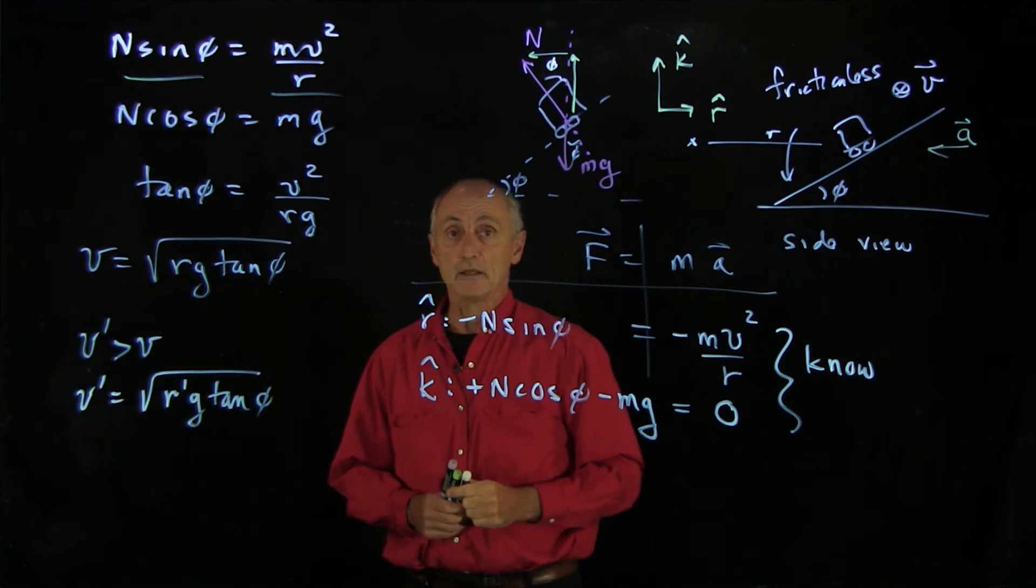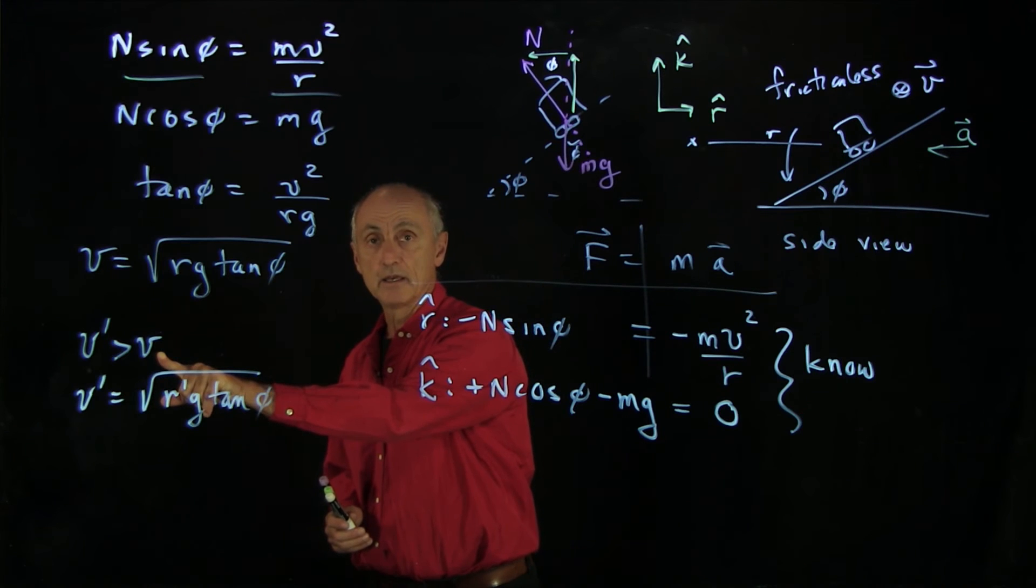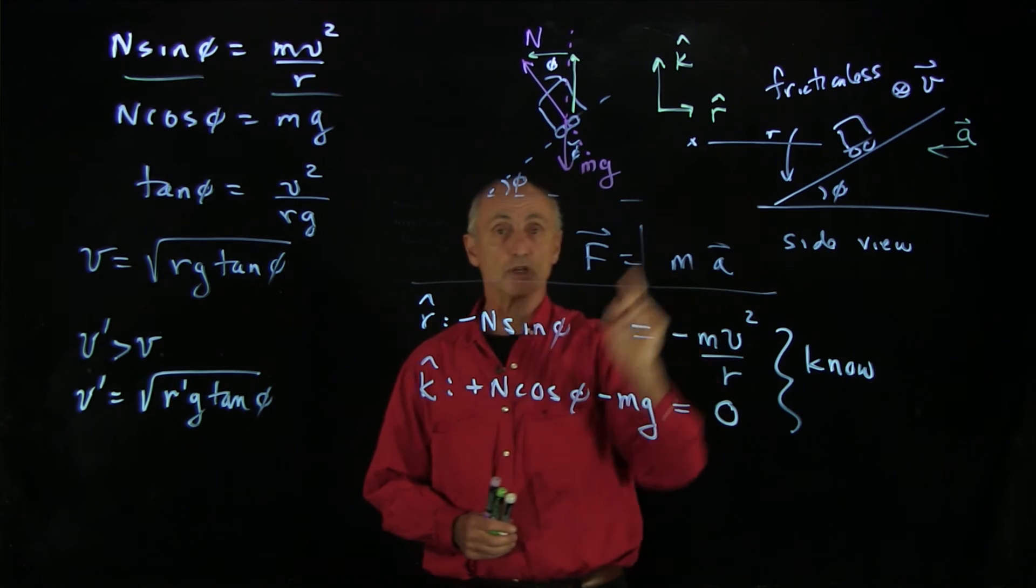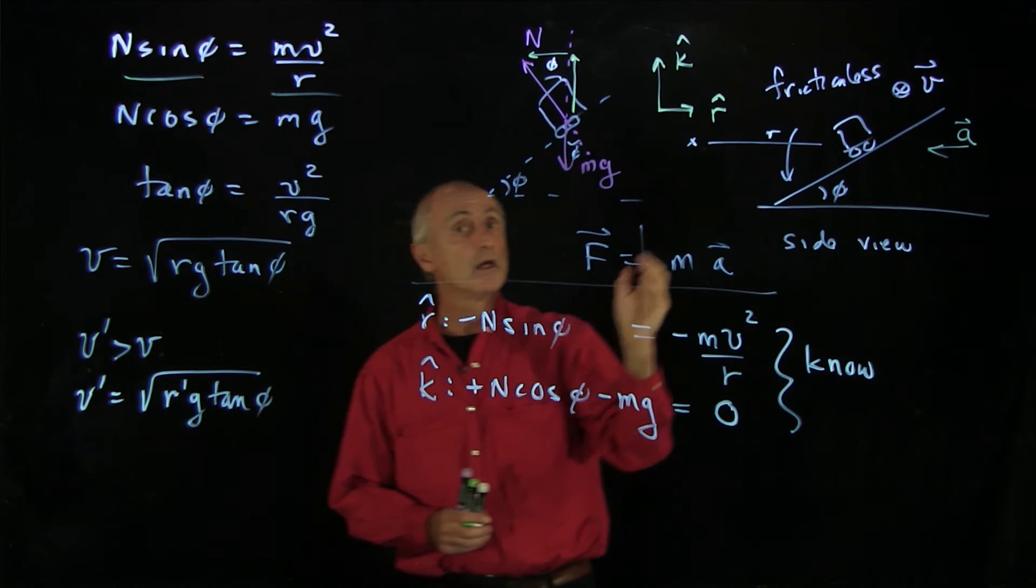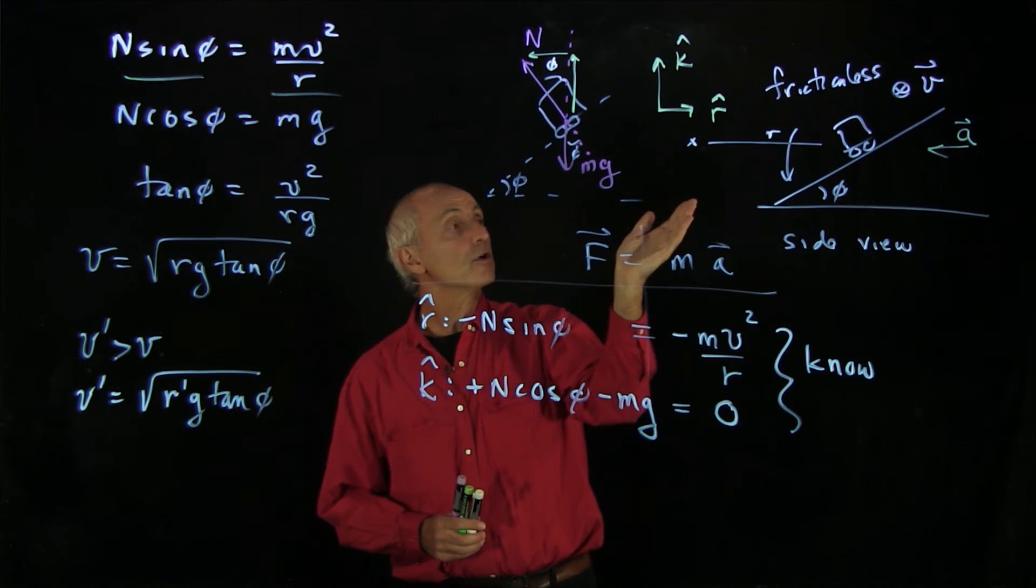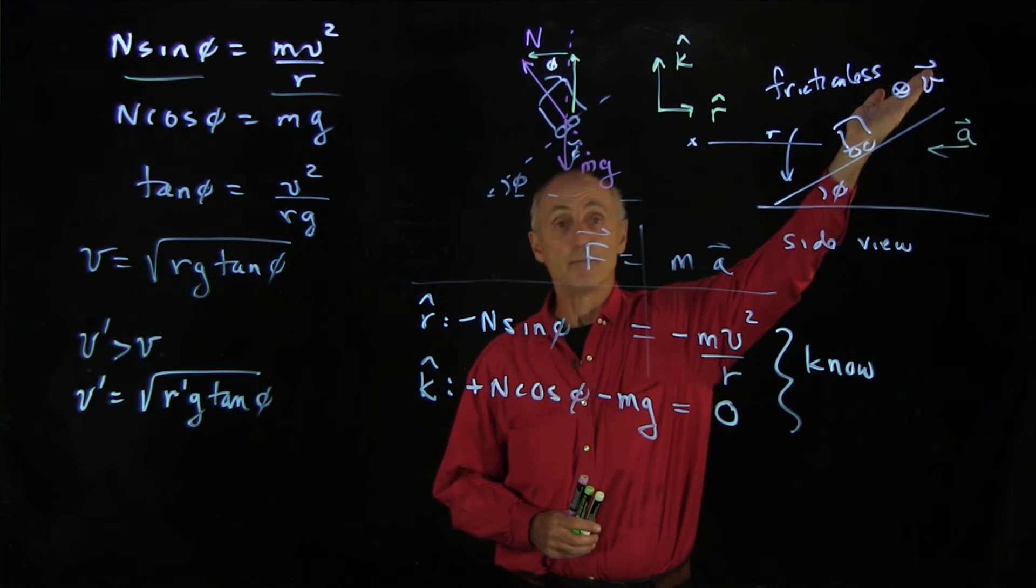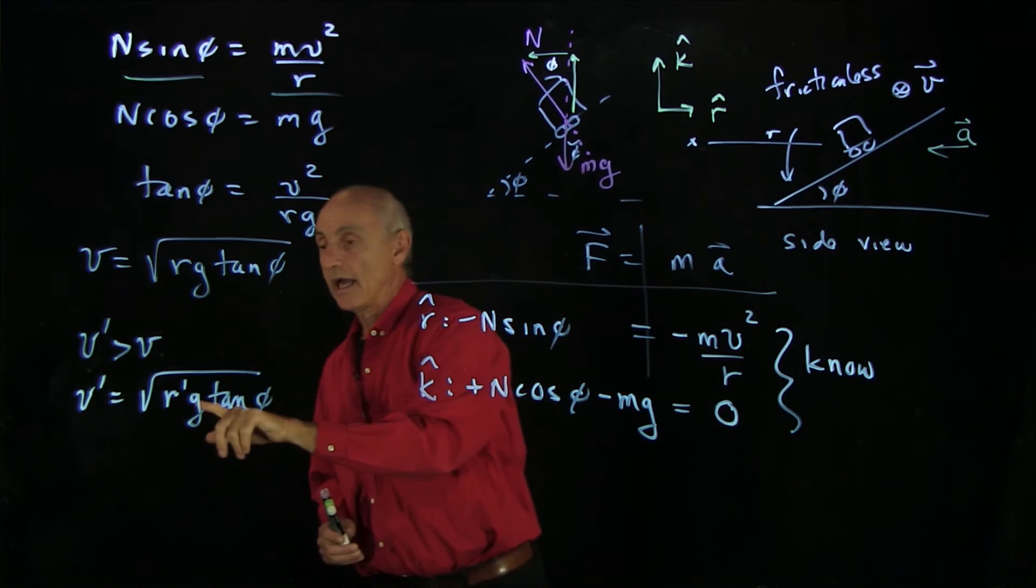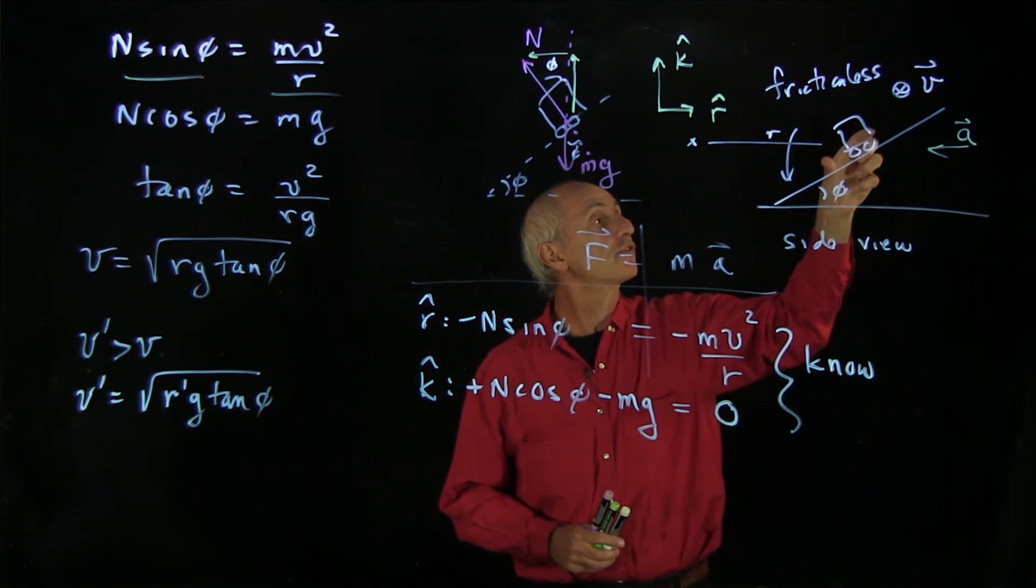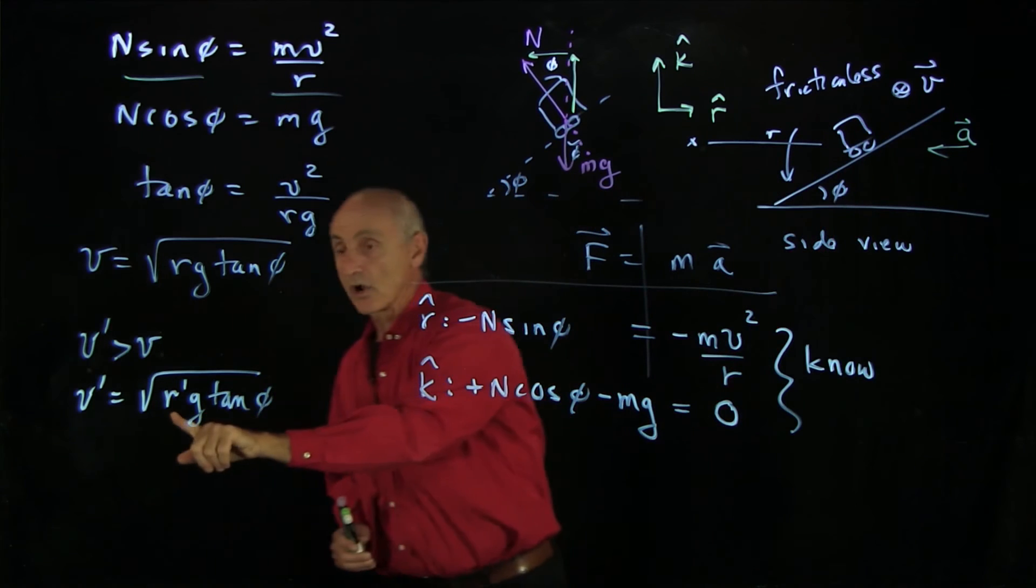What does that mean? That means that if the car is traveling at v in this circular motion, and now the driver increases the speed to v prime, the car will start to slide up the inclined plane. Remember, it's frictionless until it reaches, as it starts to slide up the inclined plane, it will get to this new radius r prime.